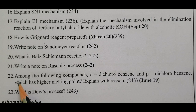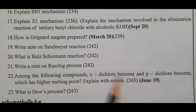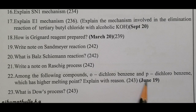Among the following compounds - ortho-dichlorobenzene and para-dichlorobenzene - which has a higher melting point? Explain with the reason. Page 243 has the answer. June 2019 question.